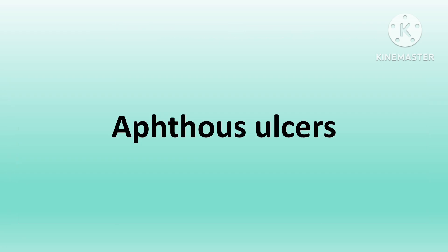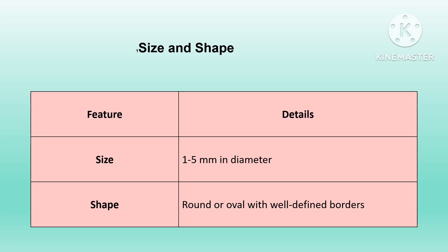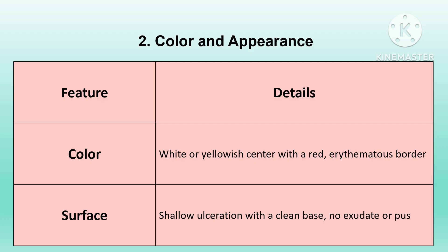Minor aphthous ulcers, also known as canker sores, are common painful lesions inside the mouth. They present as small, shallow ulcers healing on their own. Size is 1–5 mm with a round or oval well-defined border. The center is often white or yellowish surrounded by a red or erythematous border, which helps distinguish them from other oral lesions.